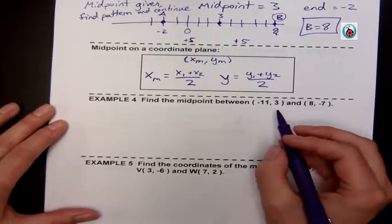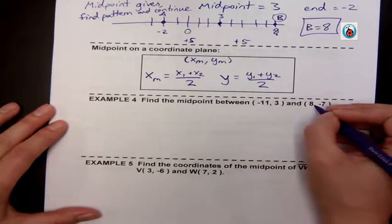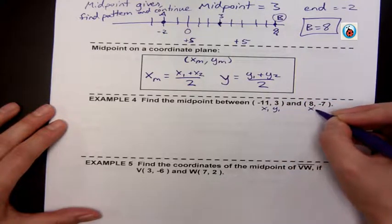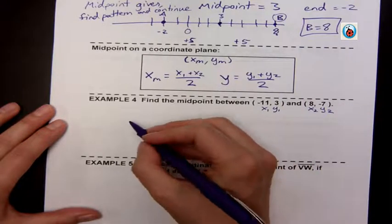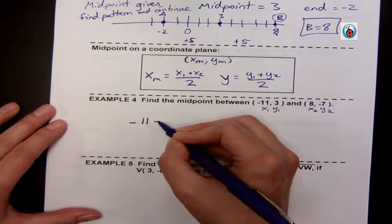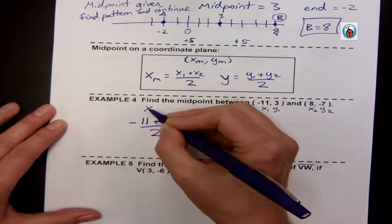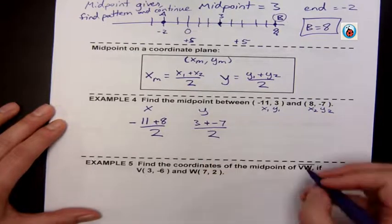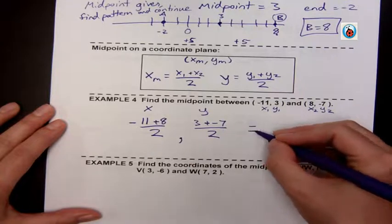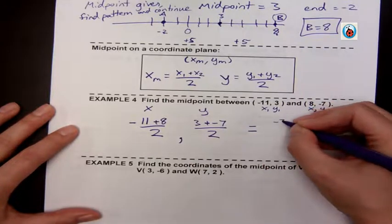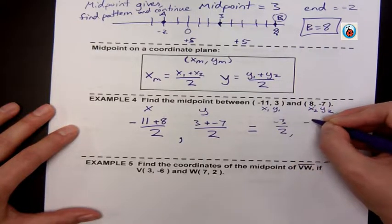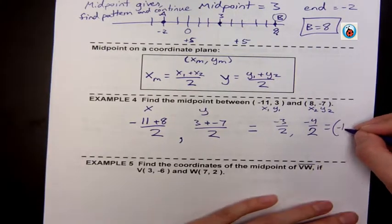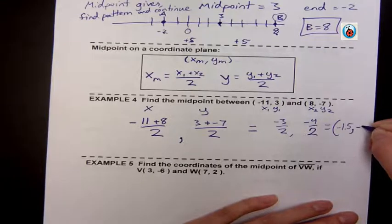So to find the midpoint between (−11, 3) and (8, −7), I go ahead and label—I always have ordered pairs. I'm going to add my x's, divide by 2. I'm going to add my y's, and that gives me negative 3 over 2 and negative 4 over 2. When I simplify, that gives me negative 1.5 and negative 2.